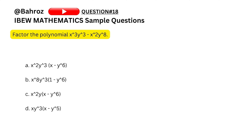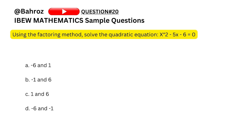Question eighteen: factor the polynomial x cubed times y cubed minus x squared times y to the power of 8. Find the common factor between the two terms. We can take out x squared and y cubed from both sides. The remainder stays inside the bracket. Which option gives us x squared and y cubed outside? It is option A, so option A is our answer.